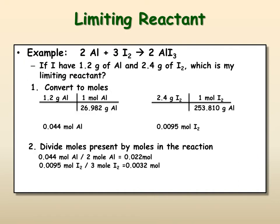So now that we have moles, we need to divide our moles present by the moles required by the reaction. So we have 0.044 moles of aluminum divided by the ratio of 2 moles that it's going to be used in the reaction. And then same thing, you do the iodine divided by the 3 moles of iodine that are used by the reaction. And you have a comparison of 0.022 moles of aluminum available for use to 0.0032 moles of iodine. And the smaller number tells you your limiting reactant. Iodine is your limiting reactant.